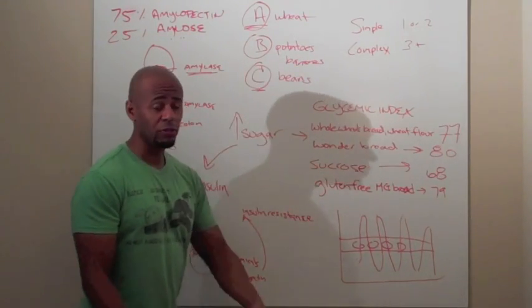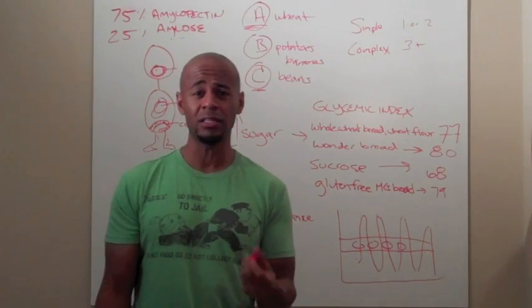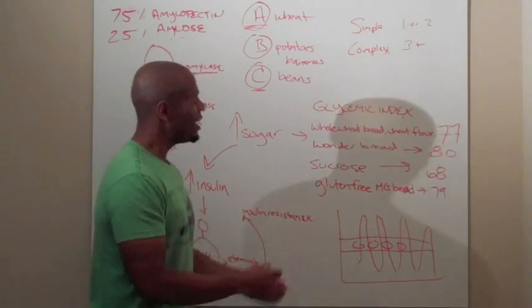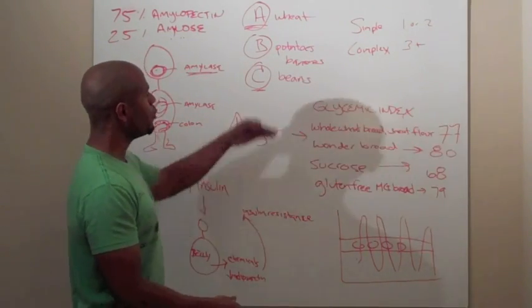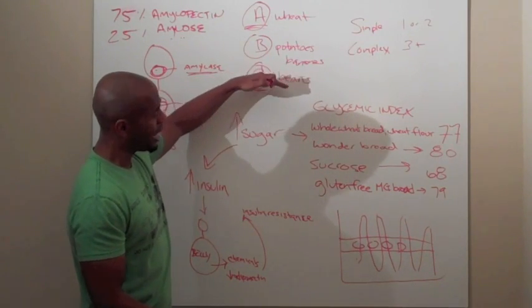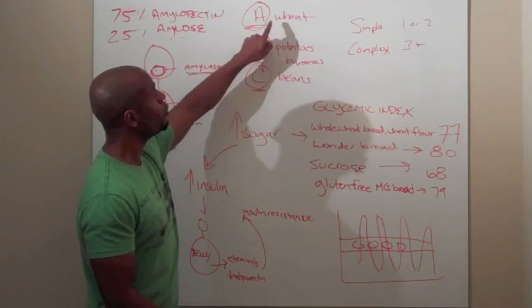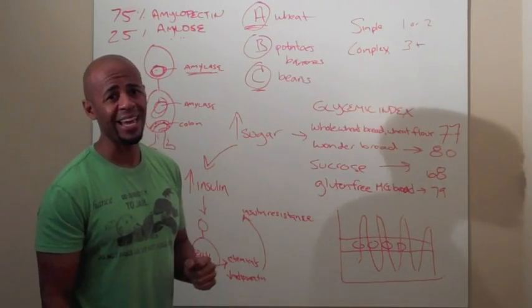Amylopectin B is what you're going to find in potatoes as well as bananas. It's broken down in digestion more easily or easier than amylopectin C. But nowhere as good as amylopectin A.